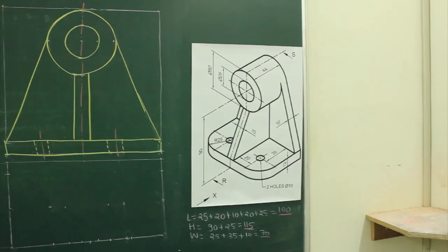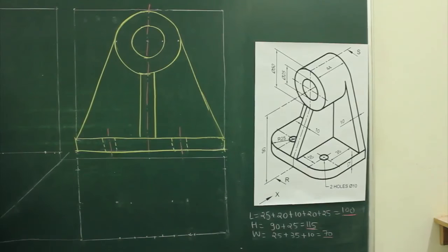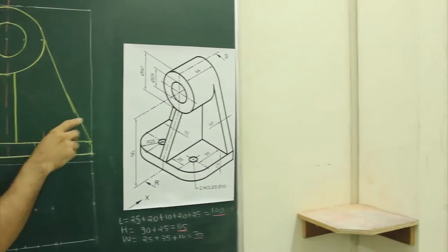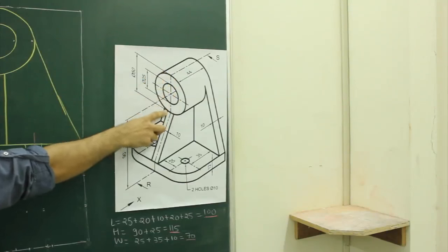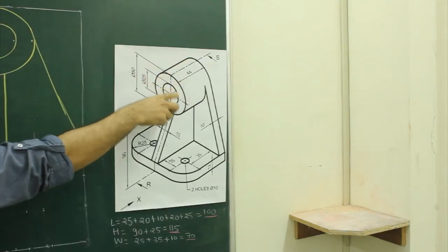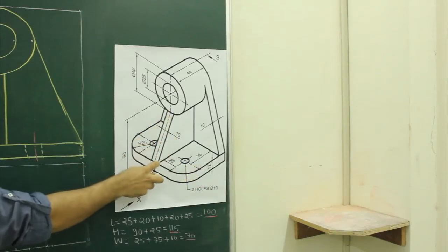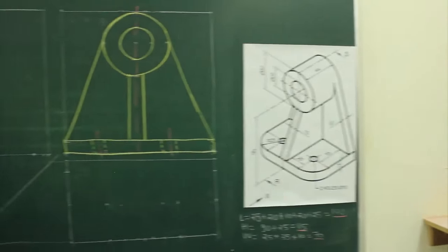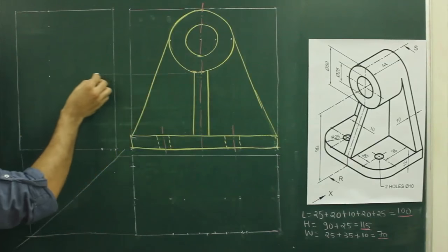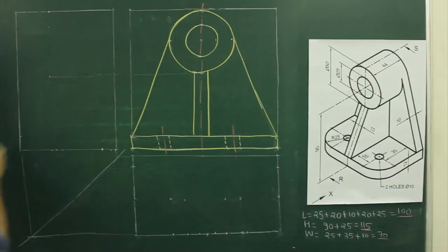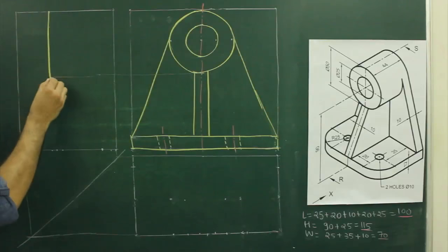Now we will draw the side view. See the main sum. In the side view, this circular part has a height of 50 and a length of 44. Then we can see the slope. We will take projection from the front view, take 44 from here, and go 50 down.